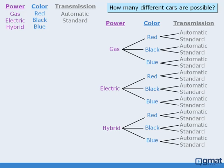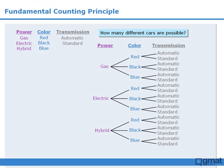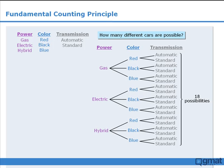So how many paths are there? Well, the total number of different paths will equal the total number of different endpoints, or leaves, on the tree. Notice that for each leaf there is a unique path. For example, this leaf is the last stage of this path, representing a blue, gas-powered car with automatic transmission. So, since this tree has 18 leaves, there are 18 possible paths, which means that it is possible to create 18 different cars given the following options.